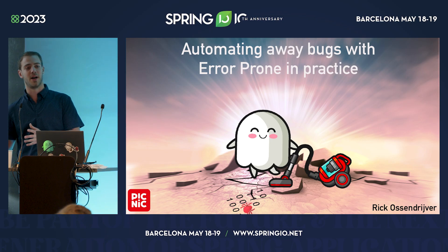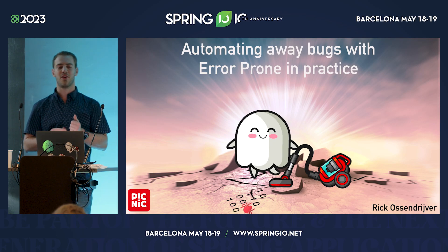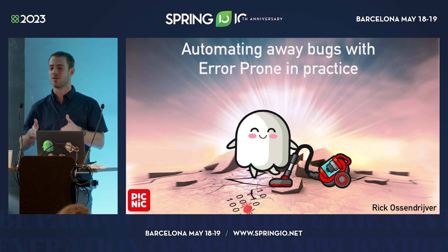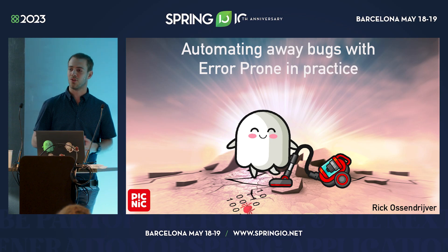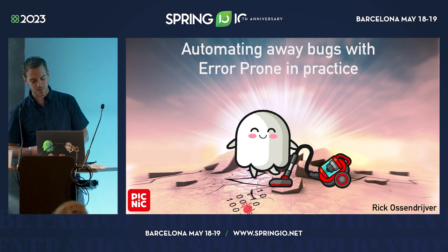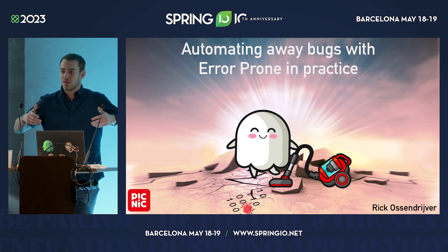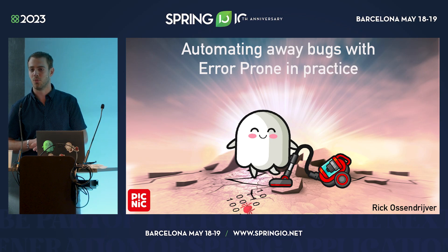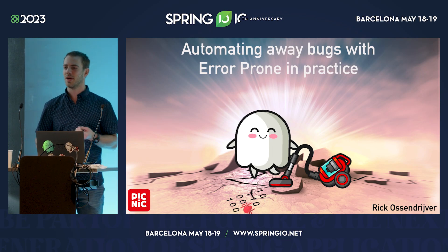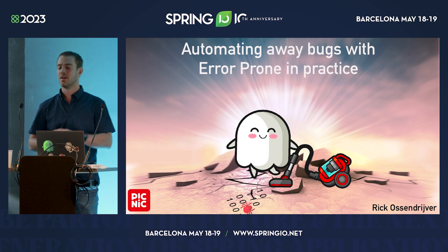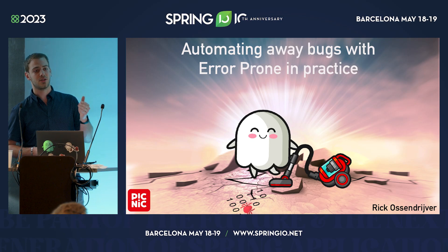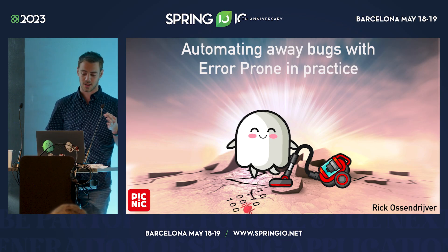When a colleague of mine opens a pull request and I start reviewing, I find myself repeatedly pointing out the same things over and over again. This can vary from common coding guidelines, some subtle bugs, or some code style issues. And the fact that I, for the fourth time that week, have to point out the same thing annoys me. So I start wondering: can't we actually start automating this? My name is Rick Ossendrijver, and today I'm going to show you how we can actually start automating away this problem.